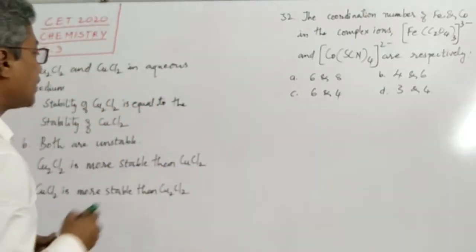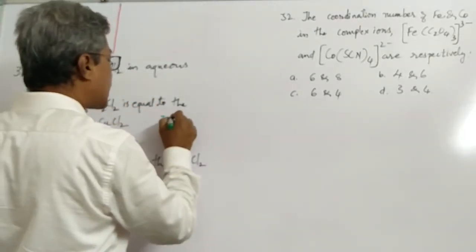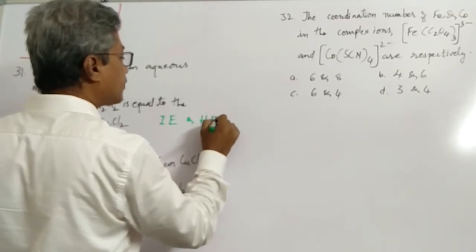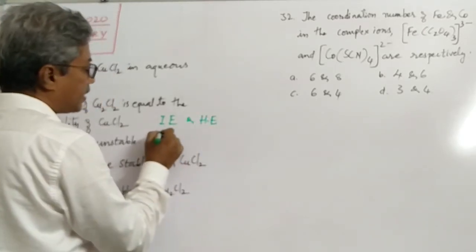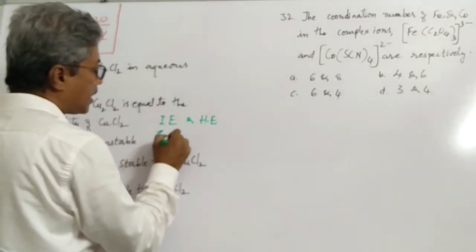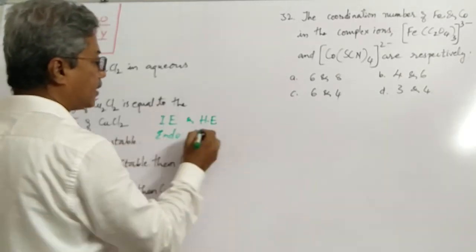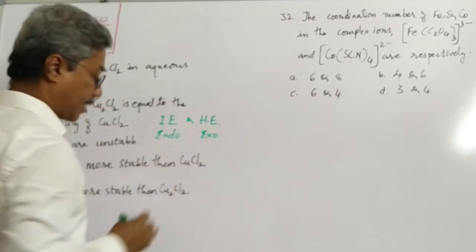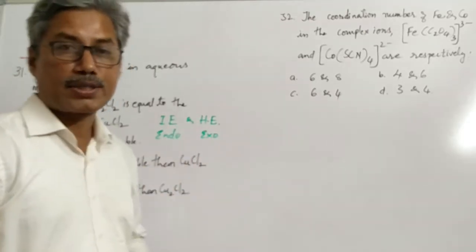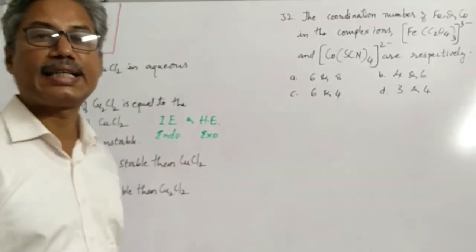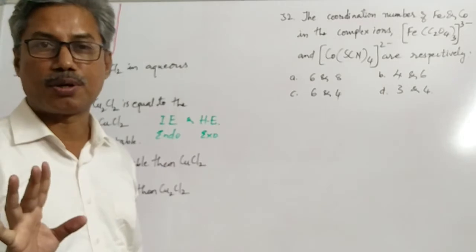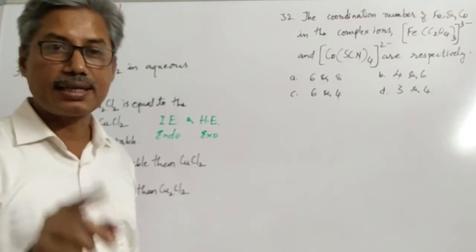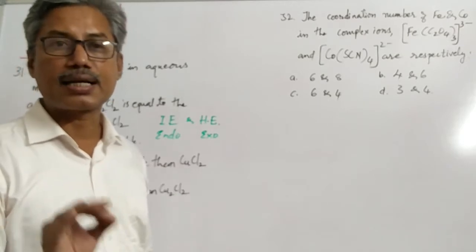To answer this stability question, we need to look at ionization energy information as well as hydration energy information. Ionization energy is energy needed, meaning it is endothermic. Hydration energy is energy released, meaning it is exothermic. For the removal of an electron, if hydration energy is very much greater than ionization energy, then that ion exists in aqueous solution in a very stable condition.